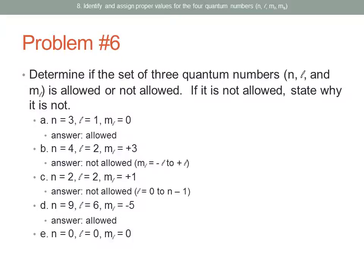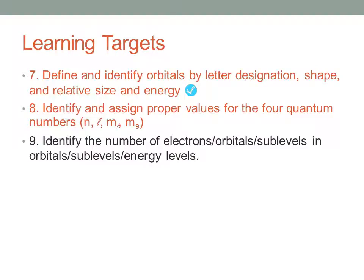The last one: N=0, L and M_sub_L don't matter. N=0 is not allowed — the smallest possible value of N is 1. N can be 1, 2, 3, or any other positive integer. So this set is not allowed, and we can stop right there.